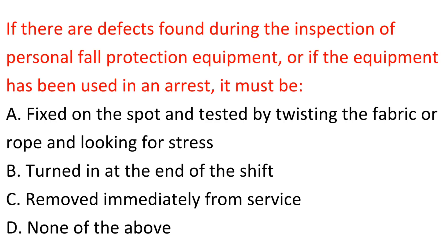Question: If there are defects found during the inspection of personal fall protection equipment, or if the equipment has been used in an arrest, it must be: A. Fixed on the spot and tested by twisting the fabric or rope and looking for stress. B. Turned in at the end of the shift. C. Removed immediately from service. D. None of the above. Answer: C. Removed immediately from service.